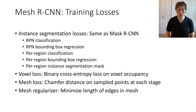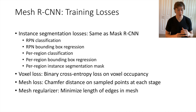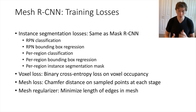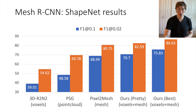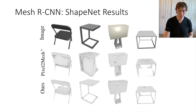MeshRCNN is trained with quite a lot of losses. It inherits all the same training losses from 2D recognition systems: classification and bounding box regression in the RPN, per-region classification, bounding box regression, and instance segmentation in the second stage. Additionally, there's a voxel loss using binary cross-entropy on voxel occupancy, a mesh loss measuring chamfer distance between ground truth and predicted mesh, and a mesh regularizer encouraging well-structured predictions. We were able to outperform all prior work on predicting 3D shapes from single 2D images at the time.